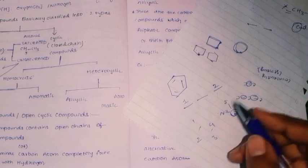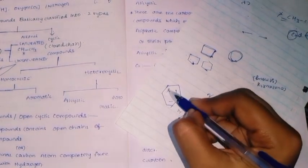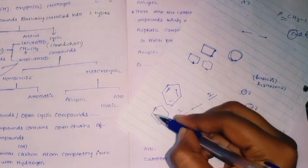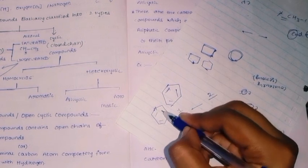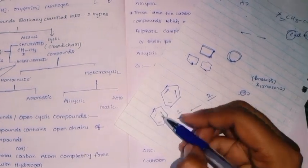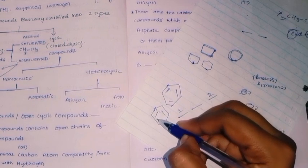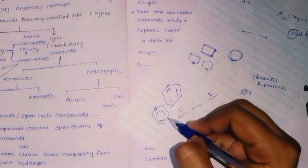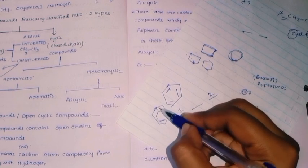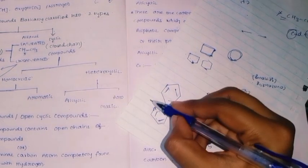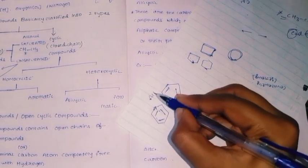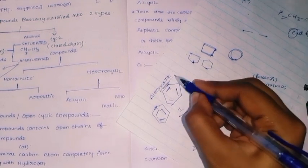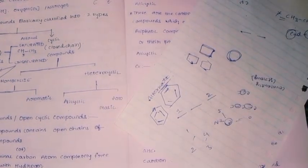Aromatic compounds have alternating double and single bonds — so double bond, gap, double bond, gap, double bond, gap. These alternating positions are known as alternate bonds. Remember this.